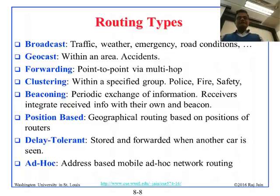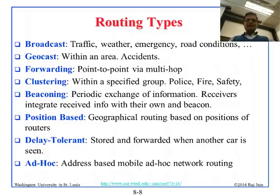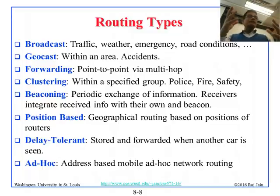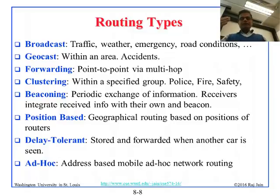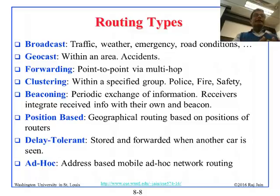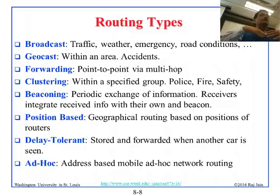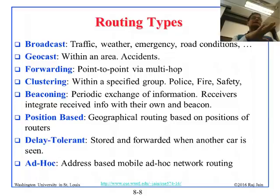For VANETs, the communication requirements cover broadcast — telling everybody in the neighborhood — geocast — telling everybody in a limited area — forwarding with multi-hop relaying, clustering within a group such as police or fire departments, and beaconing for coordination. Position-based geographical routing based on the position of routers is especially important because position changes significantly every second.